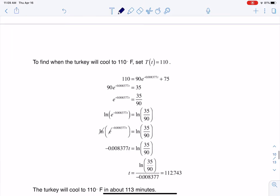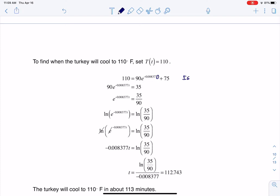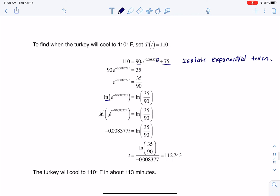I want to solve for t. So again, isolate that exponential term. And then you see the same algebra. I'm going to subtract the 75. I'm going to divide by 90. I'm going to log both sides. And then I'm going to divide by that coefficient in front of my t term. And I get 112.7. And if I round that to the nearest minute, I'm looking at 113. So it took 113 minutes to get this turkey all the way down to 110 degrees Fahrenheit.